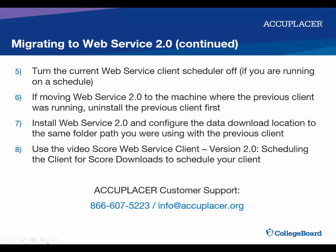Once you are ready to cut over to SCORE Web Service version 2.0, turn off the scheduler if you are using one on your current Web Service production client. If you are planning to run SCORE Web Service version 2.0 on the same machine running your current client, uninstall the current client before installing version 2.0. Once installed, configure the 2.0 client to point saved SCORE files to your production folder path so that your student information system import procedures can pick up the files from the new client.